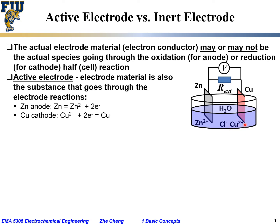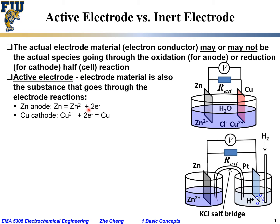So both zinc and copper participate actively in the electrode reactions — the anodic and cathodic half-cell reactions. These types of electrodes are called active electrodes.